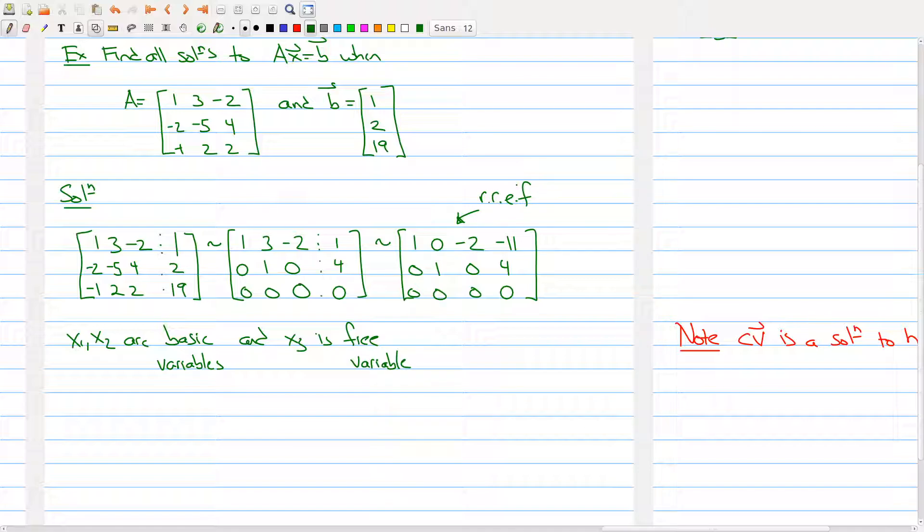Because we've put the matrix into reduced row echelon form, we can write each of the basic variables in terms of the free variable. Describe the basic variables in terms of the free variables.